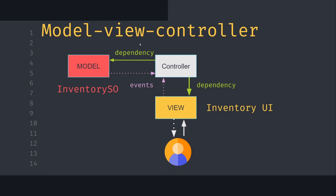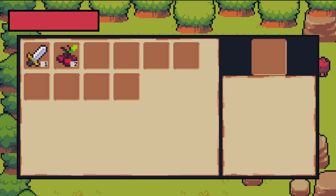To keep the code base maintainable, I'm also going to show you how we can use the model-view-controller design pattern to split the code behind the model — our inventory scriptable object — and the view — the inventory UI.